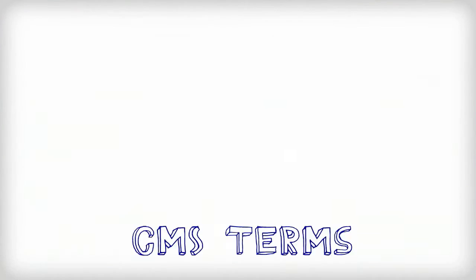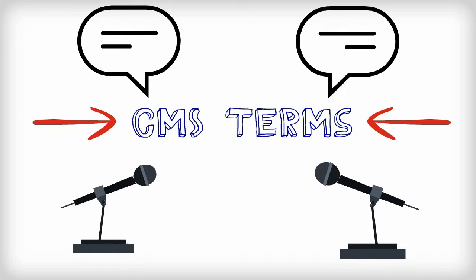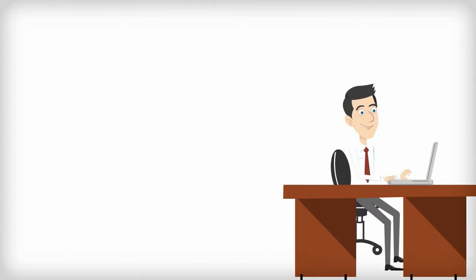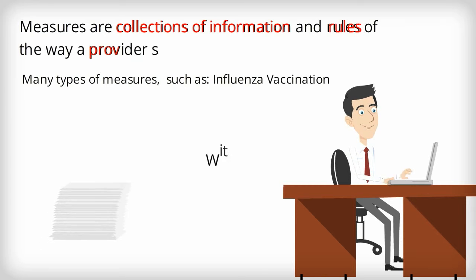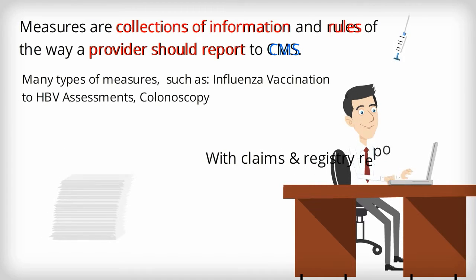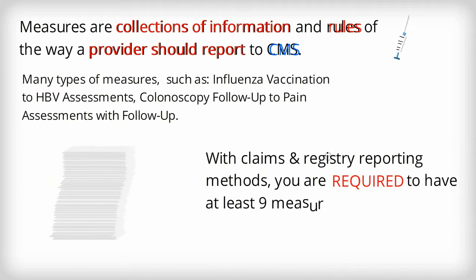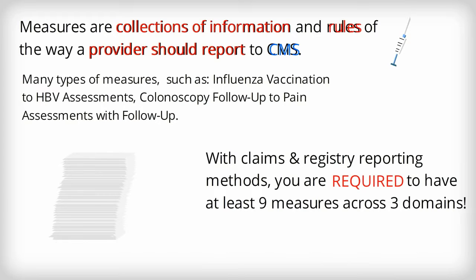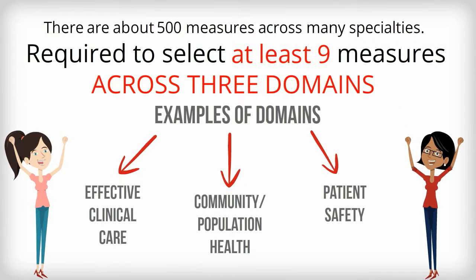Having a general idea of the terms CMS uses is the start of understanding what needs to be done, beginning with the most important part: measures. Measures are collections of information and rules dictating the way a provider should report to CMS, and there are many types of measures, from influenza vaccination to HBV assessments and even colonoscopy follow-ups. With claims and registry reporting methods, you are required to select at least 9 measures across 3 domains, or classifications of measures, like effective clinical care and community or population health. There are roughly 500 measures to choose from.